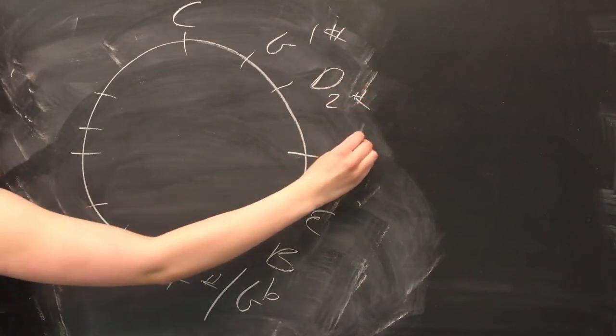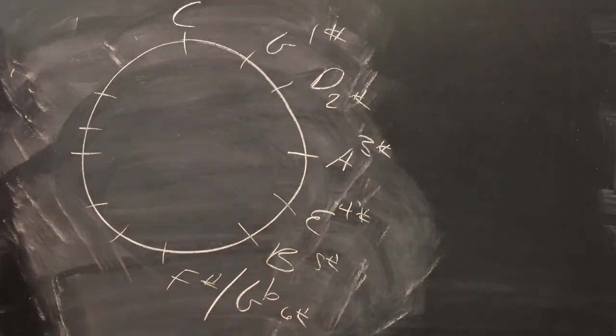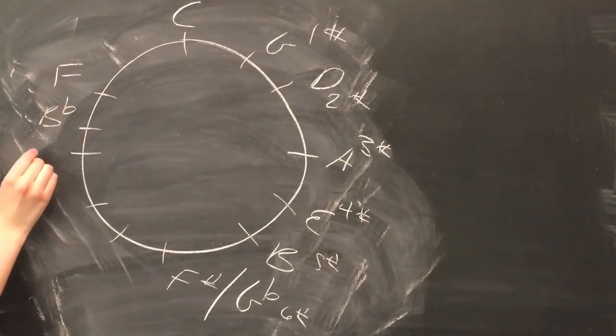G has one sharp, D has two sharps, and so on. Once we get to the bottom of the circle, however, there are so many sharps that we start using flats instead. It helps keep things simple.